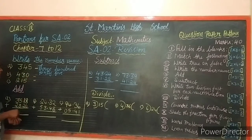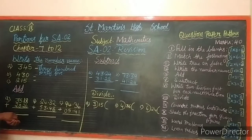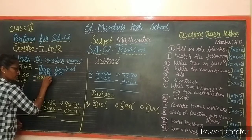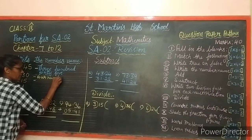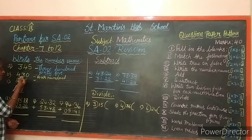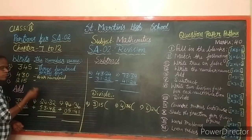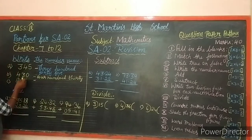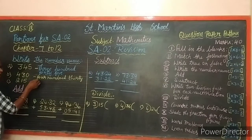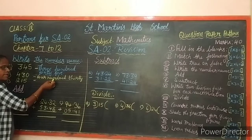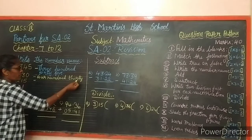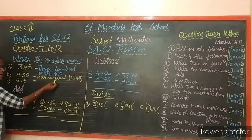The next number is 430. First we take 4, that is 400 - Four Hundred. Then the tens and ones: 30 is Thirty. So 430 is written as Four Hundred and Thirty.